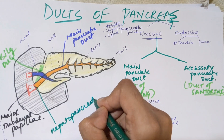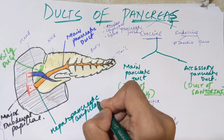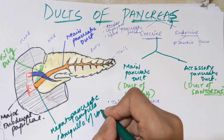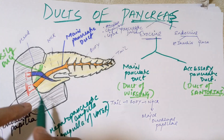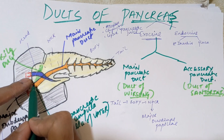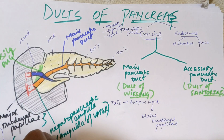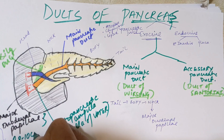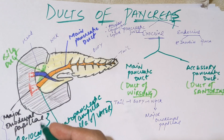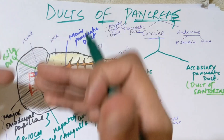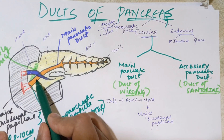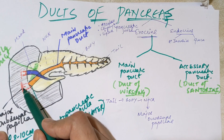This ampulla formed by the joining of the main pancreatic duct and the bile duct is called the hepatopancreatic ampulla, also known as the ampulla of Vater — named after the scientist Vater. This major duodenal papilla is situated 8 to 10 centimeters distal from the pyloric part of the stomach. The main pancreatic duct thus travels from tail through head and pierces the duodenum at the major duodenal papilla.